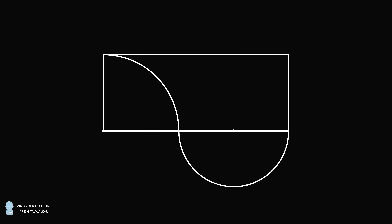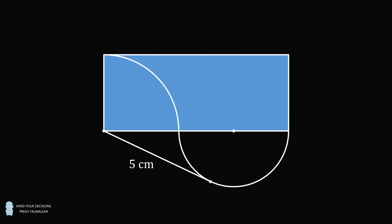Now, construct a tangent line between the lower left corner and the semicircle. If the tangent line has a length equal to 5 centimeters, then what is the area of the rectangle equal to?